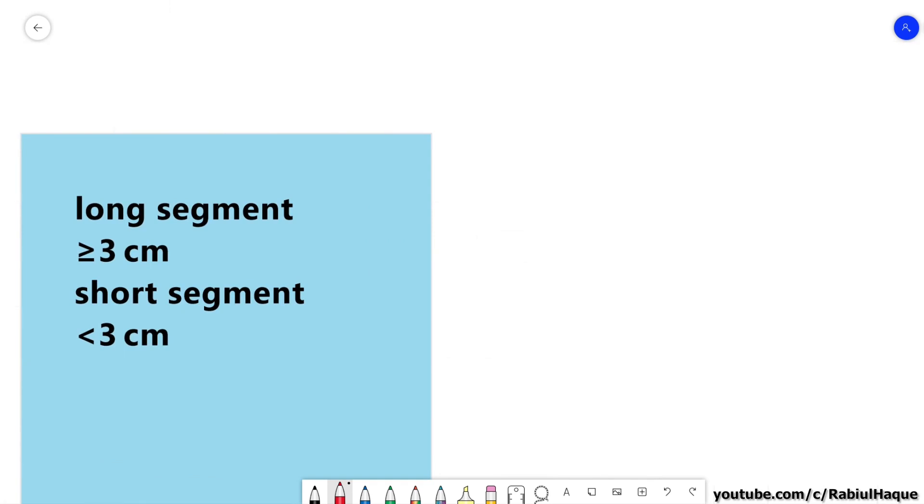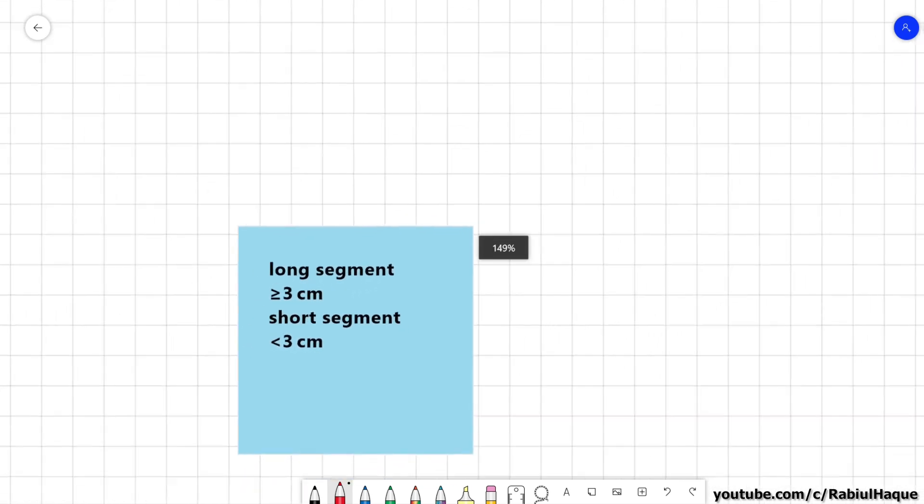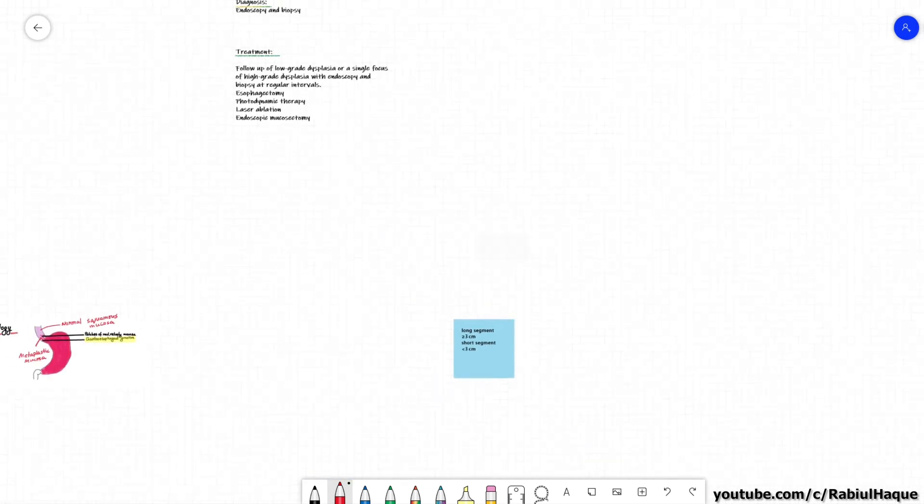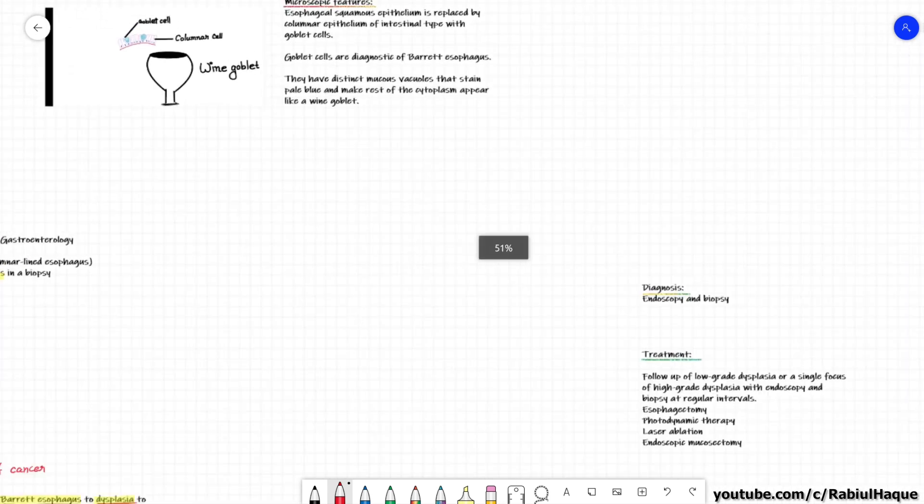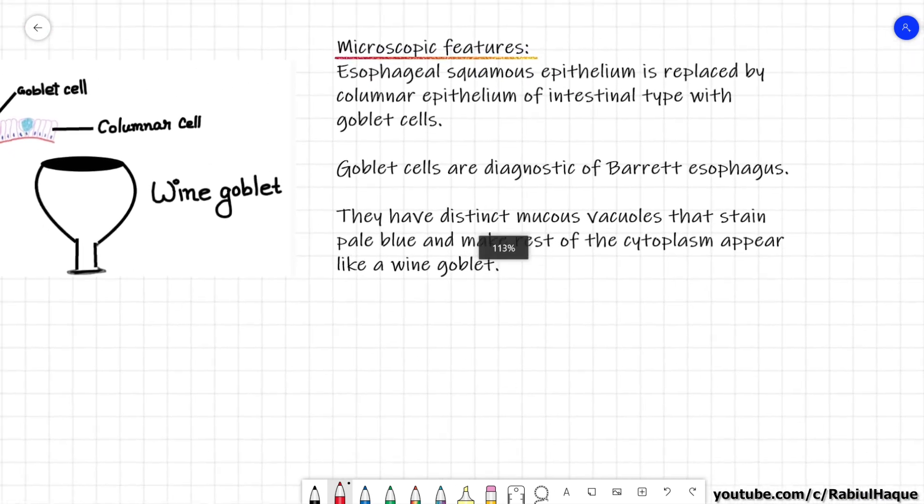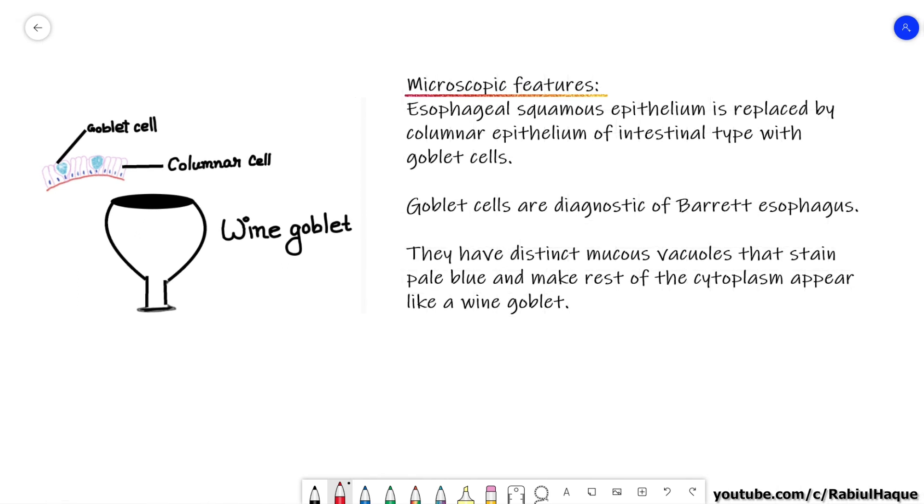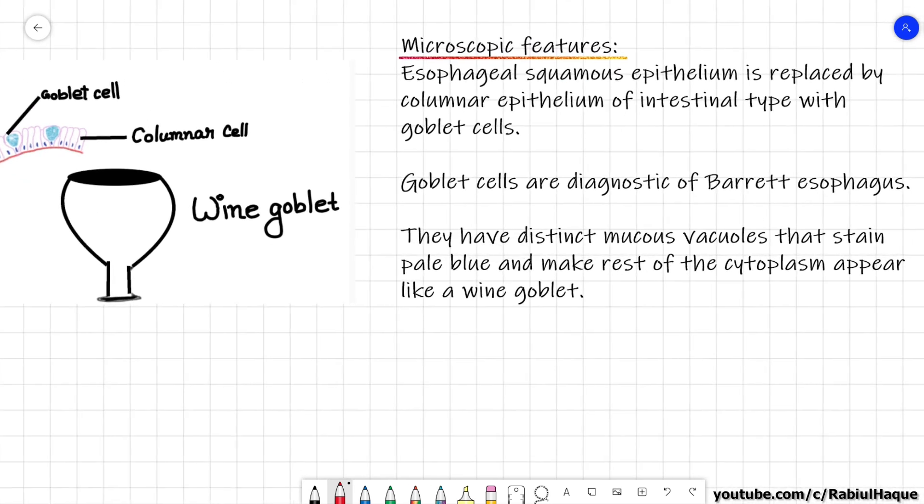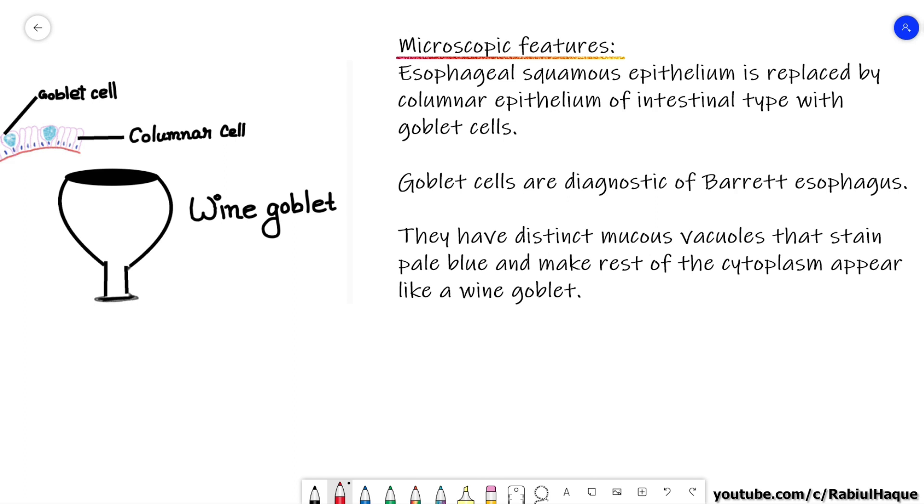So what are the microscopic features? Esophageal squamous epithelium is replaced by columnar epithelium of intestinal type along with goblet cells. Now goblet cells are diagnostic of Barrett esophagus. Always remember they have distinct mucus vacuoles and these mucus vacuoles stain pale blue and they make rest of the cytoplasm appear like a wine goblet. And there may be dysplasia, low grade or high grade.